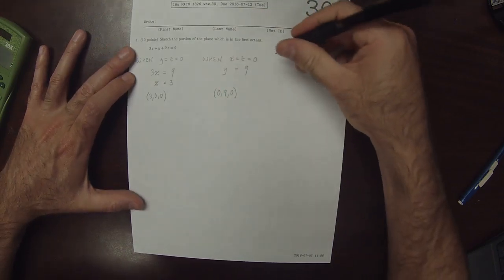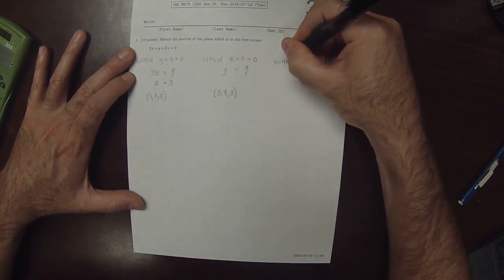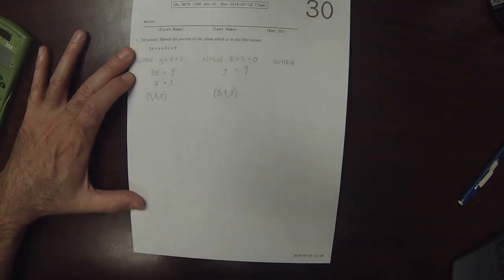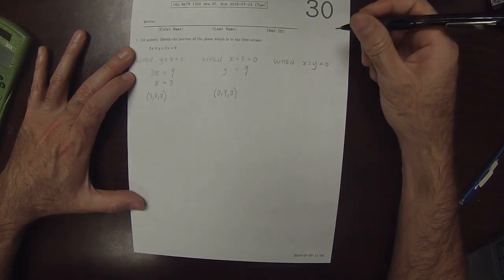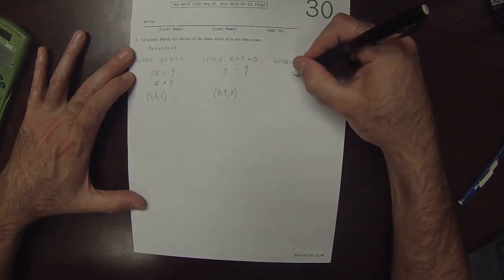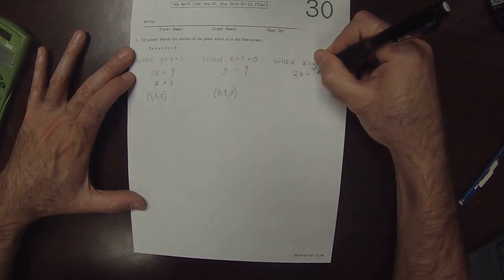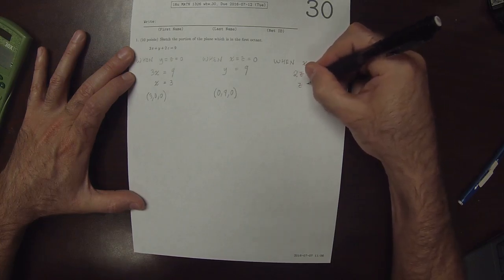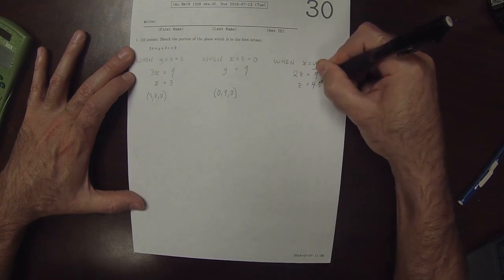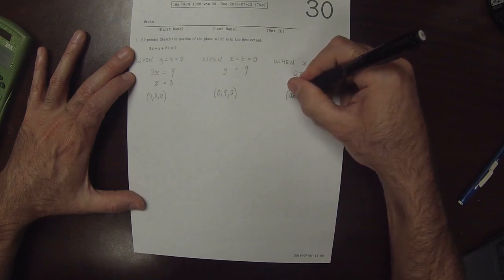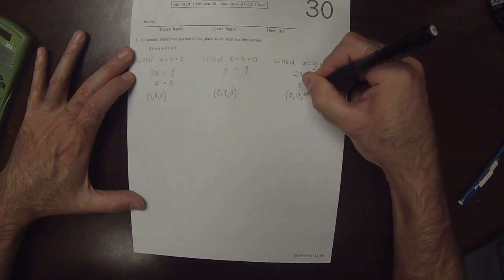When x equals y equals 0, then we have 2z equals 9, so z is 4.5. The point (0,0,4.5) is on the plane.